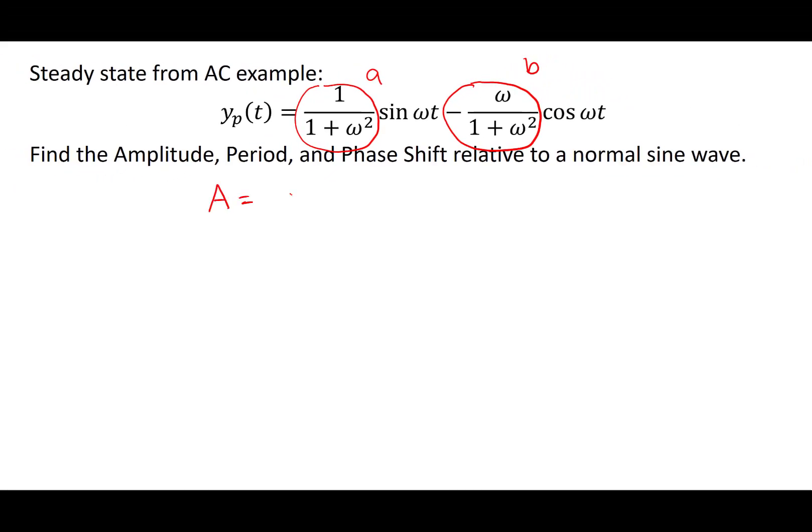So a little bit of algebra shows that when you look at the square root of a² + b² in this case, the result will simplify to 1/√(1+ω²).